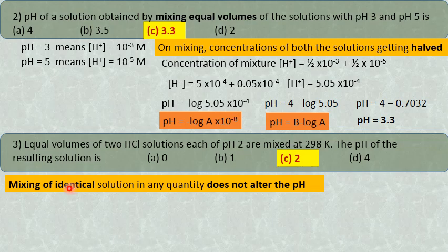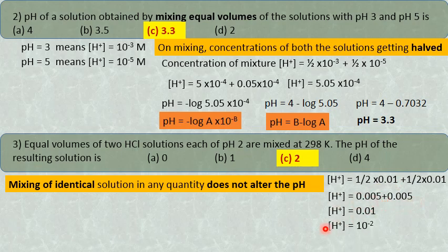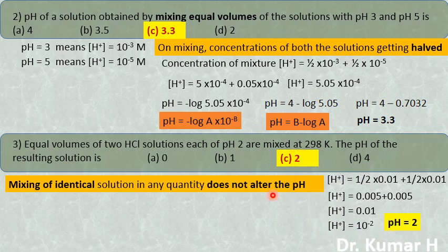When equivalent volumes of the two identical solutions are mixed, if you mix an identical solution, then the pH of the solution does not alter. Both solutions are equal volume with the same pH, and if you mix those two, the pH will not change. So it will be 2 again — the answer is 2. Verification: pH 2 means 10 raise to minus 2, that is 0.01. Half of each is half into 0.01 plus half into 0.01, which on simplification is 0.005 plus 0.005, giving 0.01. This 0.01 is 10 raise to minus 2, which is pH 2 — and that is the answer. Be cautious while reading the question, analyze it properly, and use the shortcut methods explained in these videos to answer questions in a diligent manner.